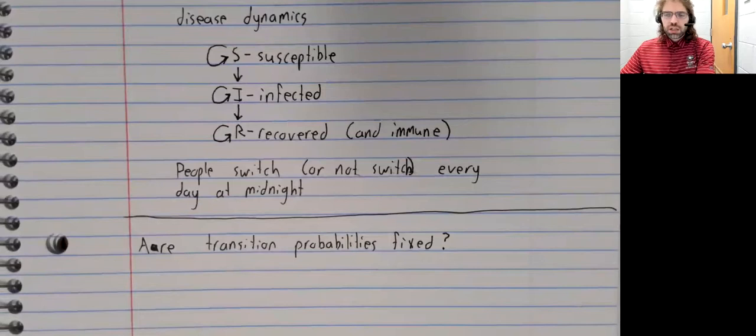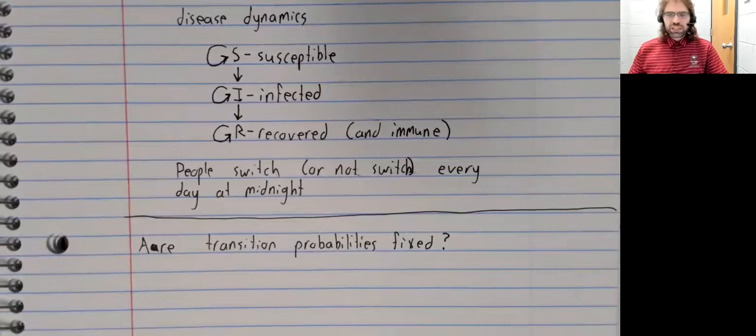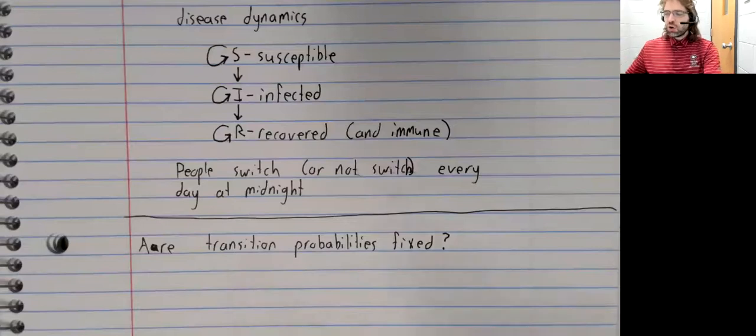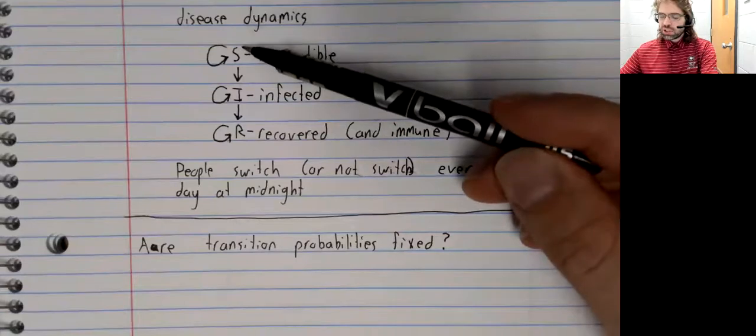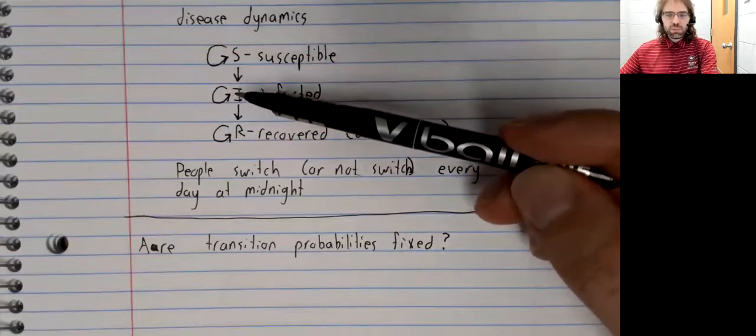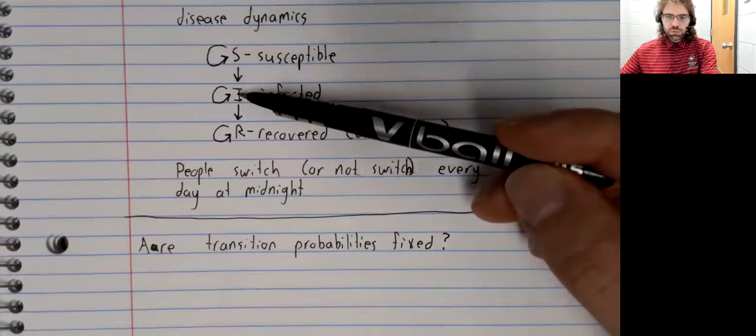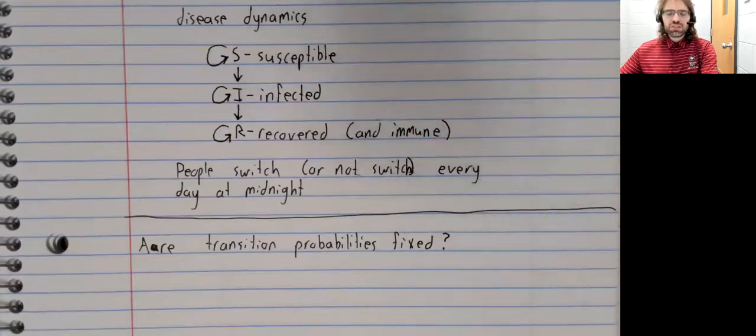Consider the current epidemic, the COVID epidemic. When COVID first came to America, there weren't any cases in Chadron at all. There was nobody who could infect me with COVID. So my probability of transitioning from susceptible to infected was zero.